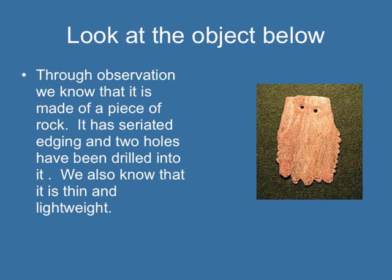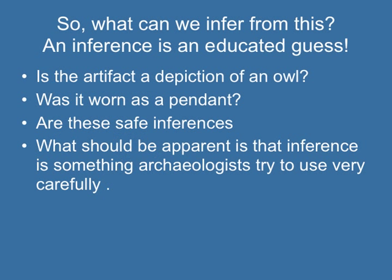Because they don't know. So how would you make an observation about this object? You could say that it's serrated on the edges, meaning it's kind of worked along the edges. It has two holes drilled into it, and it's thin and lightweight. But inferences would be: is it an owl? Was it worn as a pendant? As an archaeologist, you have to use inferences.